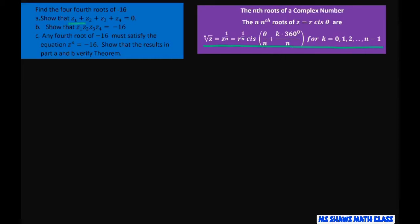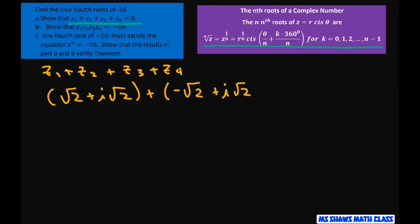Now we need to show that our z's add up to 0. So to add z1 plus z2 plus z3 plus z4, you just add them all up from the previous slide. So that's going to be √2 plus i√2, plus negative √2 plus i√2, minus i√2, plus √2 minus i√2.